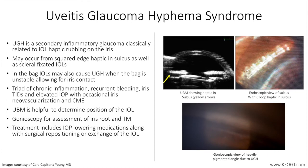You can see an image of that on endoscopy with a haptic sitting in the sulcus. Here's the anterior portion of the capsular bag, and the haptic is clearly outside of the capsular bag and sitting in the sulcus. Complications are less likely to occur with rounded PMMA, PVDF, or polypropylene haptics, which are found in three-piece IOL designs.